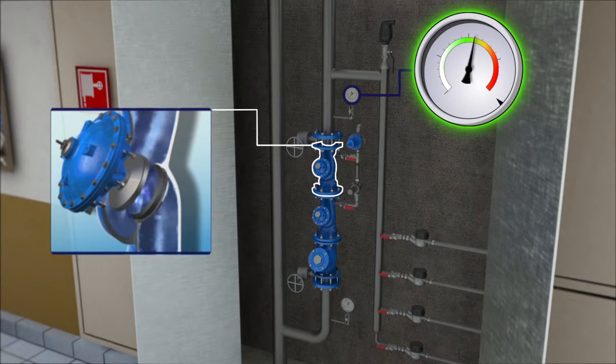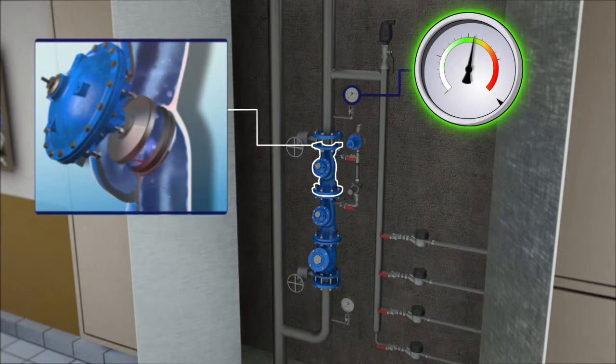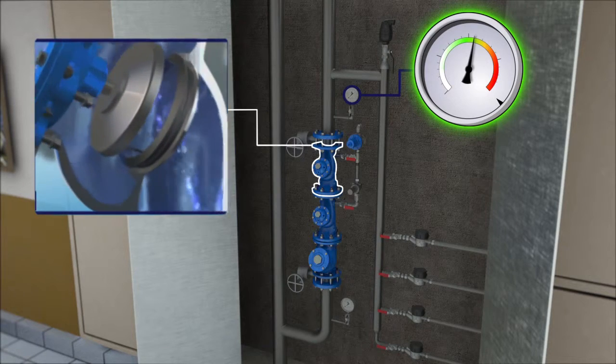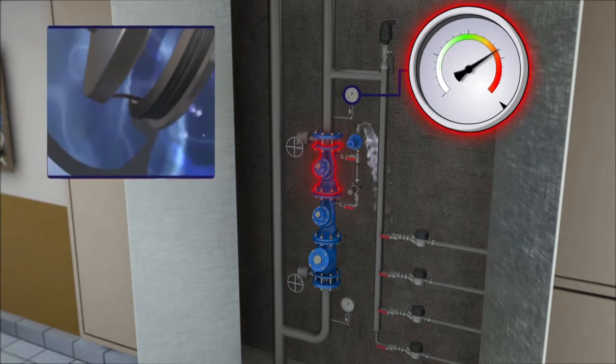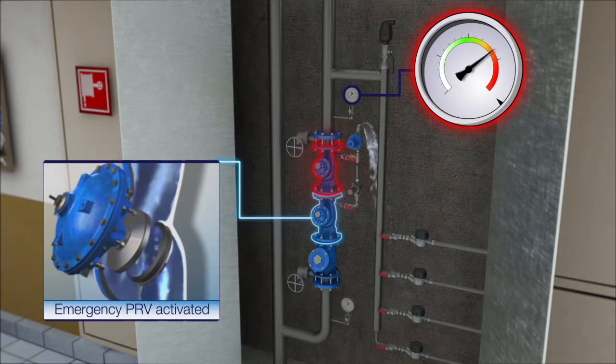In case of a malfunction, by foreign object for example, the downstream pressure excessively rises. The emergency pressure relief valve opens its vent port, but this cannot solve the problem.